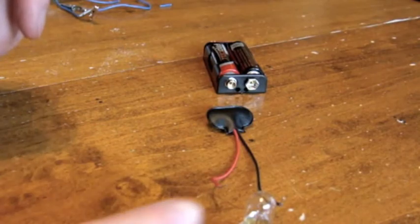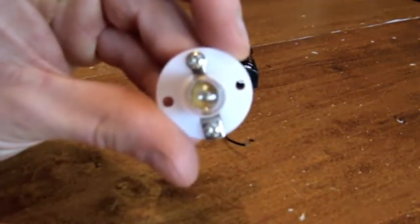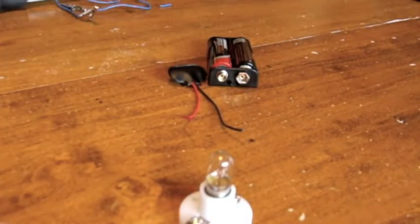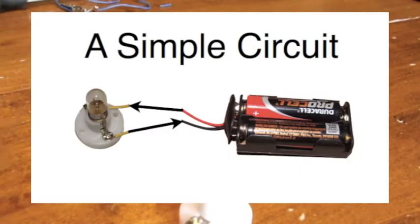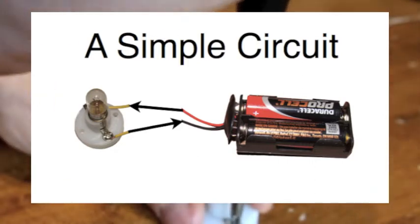We're also going to need a bulb to show that our circuit is on. The way we're going to connect these is in one big wire loop.